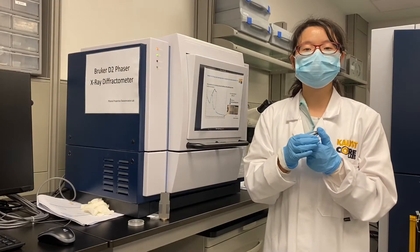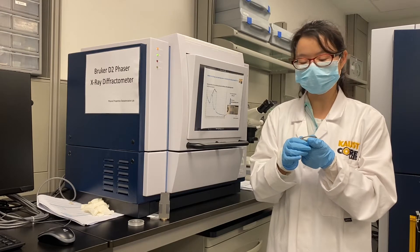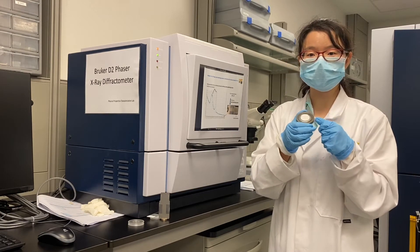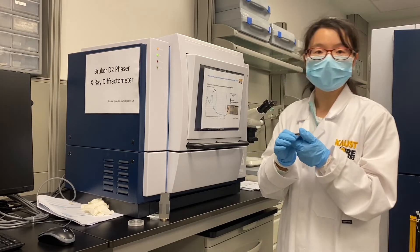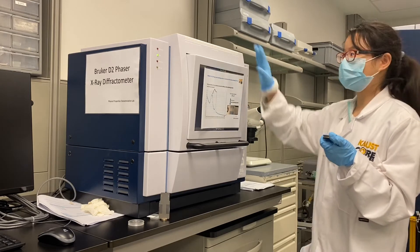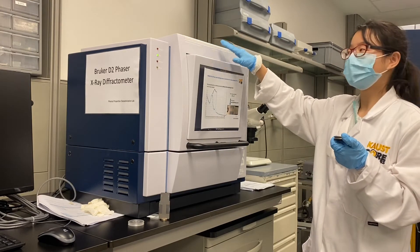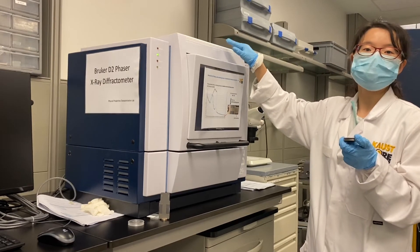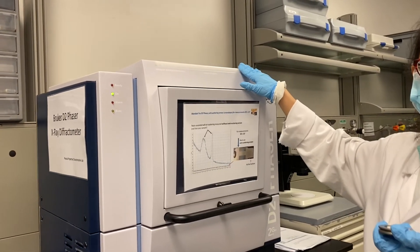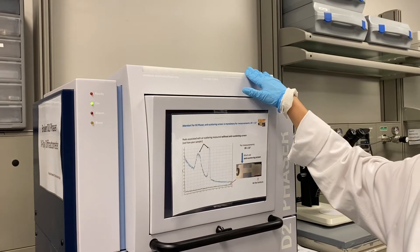Then I will show you how to use the D2 Phaser machine. In this video, we will use the standard sample project. And first, let's show how to mount the sample. Here you can see this is the X-ray light. Now you can see it's off, means that it's safe. So in this situation, you can open the door.